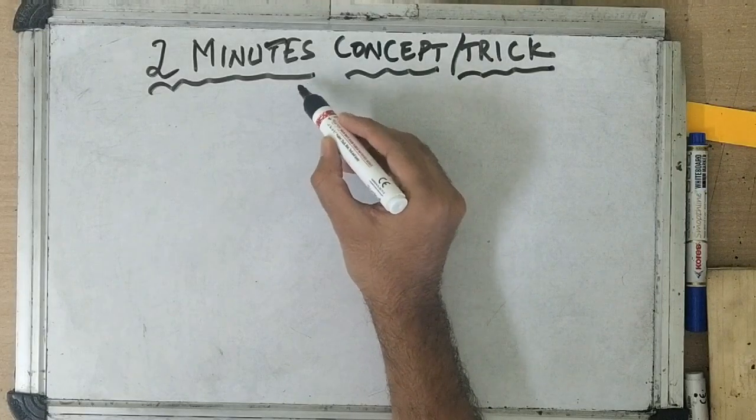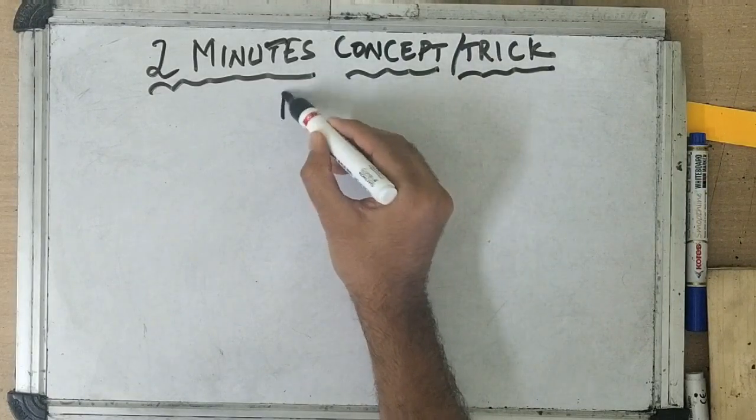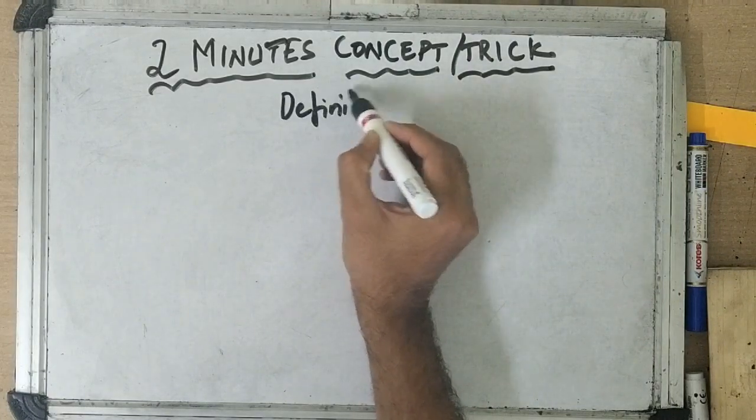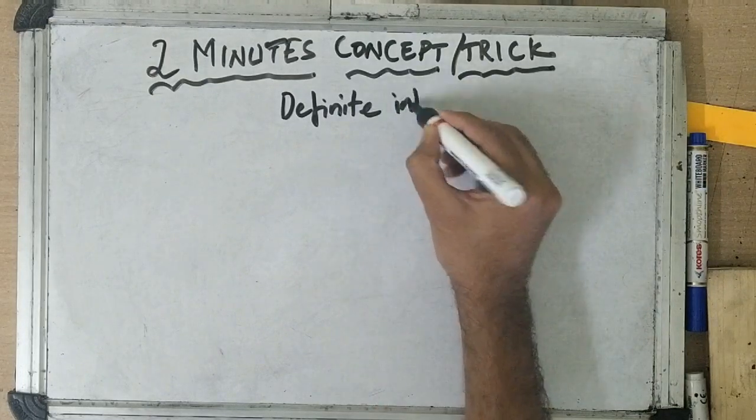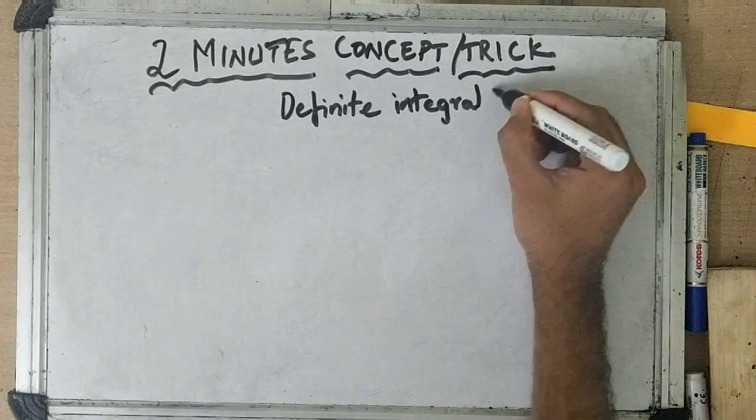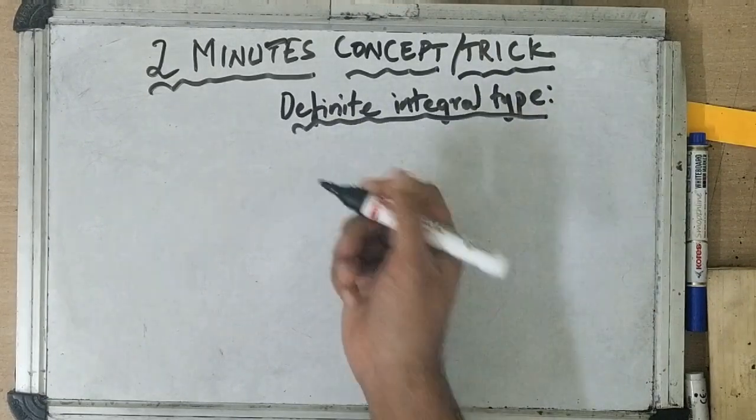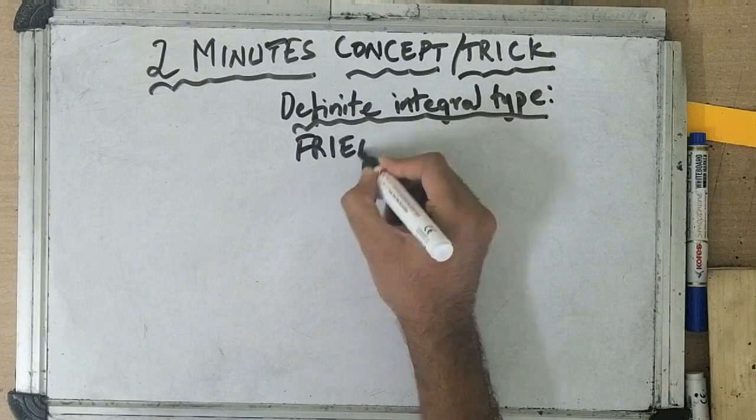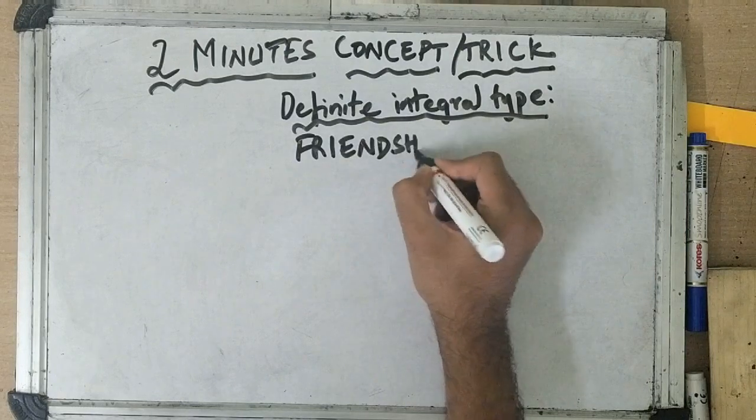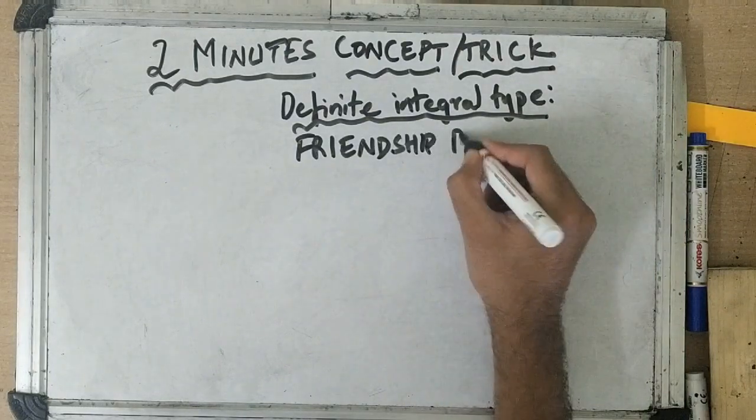Today we will talk about something called as a definite integral type. More specifically I call this friendship problems.